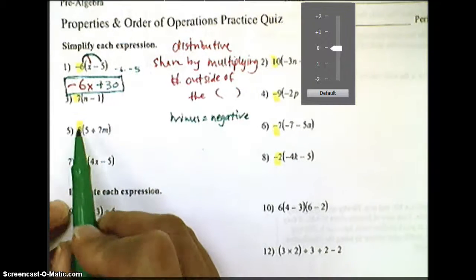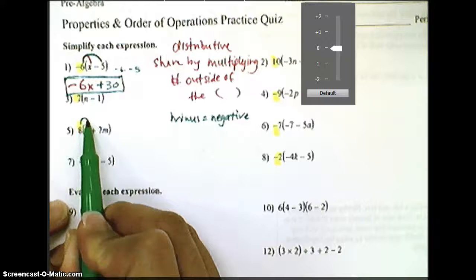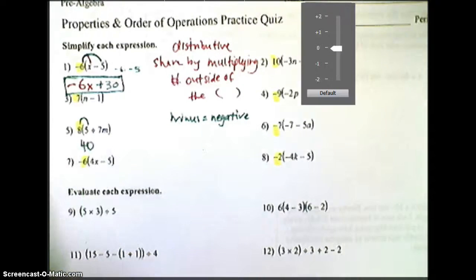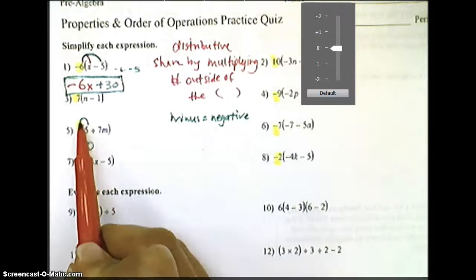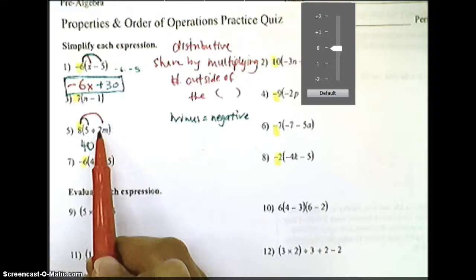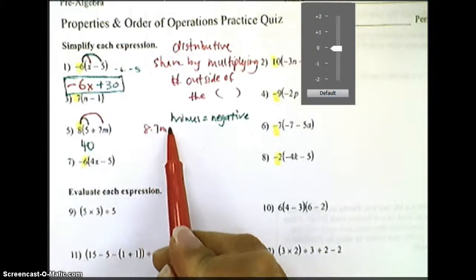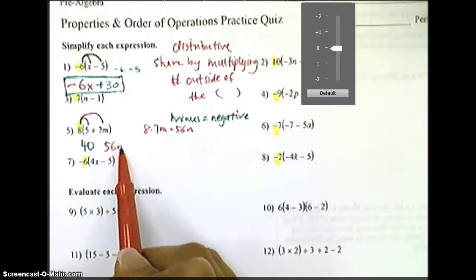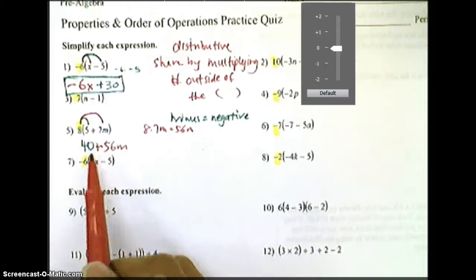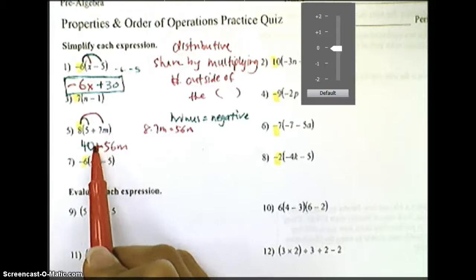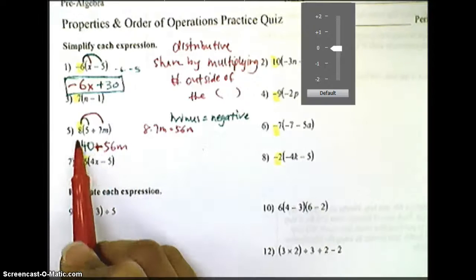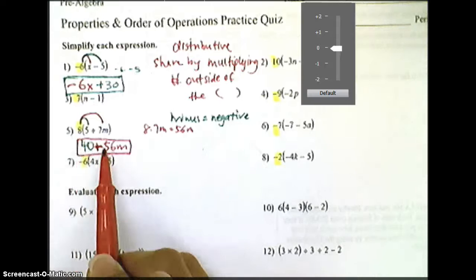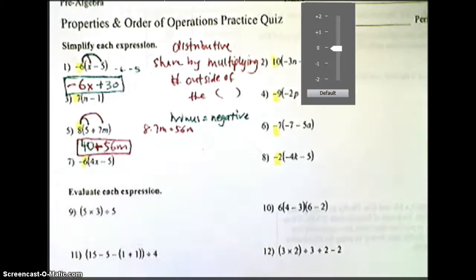Okay, then we have number 5. We're going to multiply the 8 with the 5, so that's our first rainbow. 8 times 5 is 40. Then we're going to do our second rainbow arrow, 8 times 7m. 8 times 7m is the same as 56m. So I'm going to write that next to the 40. But I'm going to add a positive sign in the middle, and I'm going to leave it like that because I cannot add a 40 with a 56m, since 40 doesn't have an m.